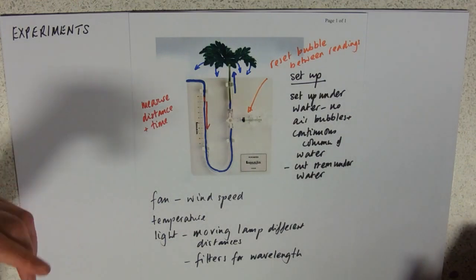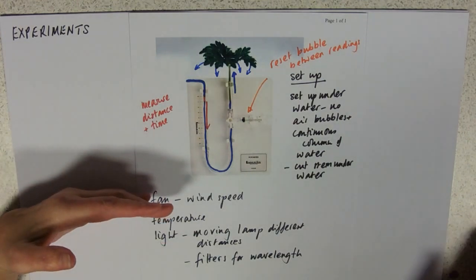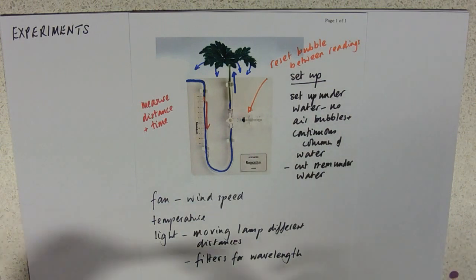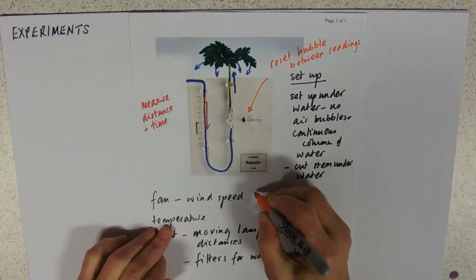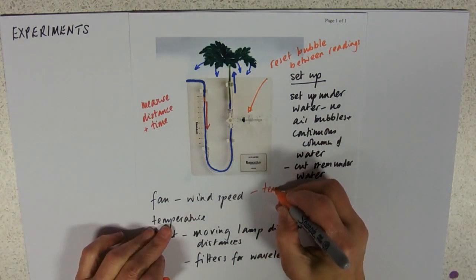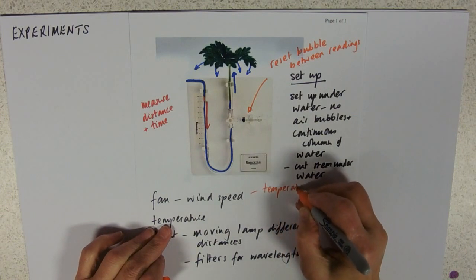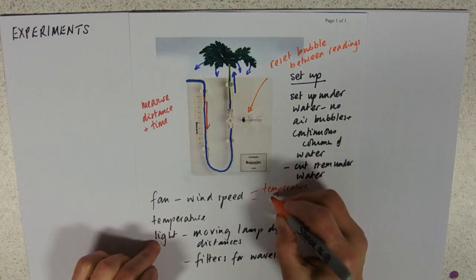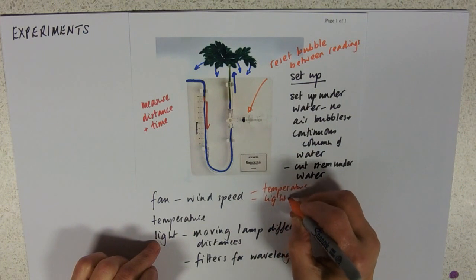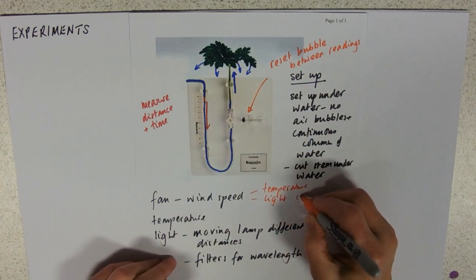Obviously, if you're doing wind speed, things you will need to keep the same would be the temperature, so you'd need a cool fan. You'd need the light to be the same, both in terms of colour and intensity.